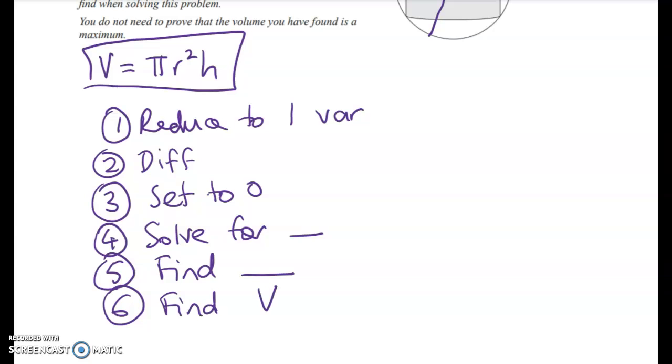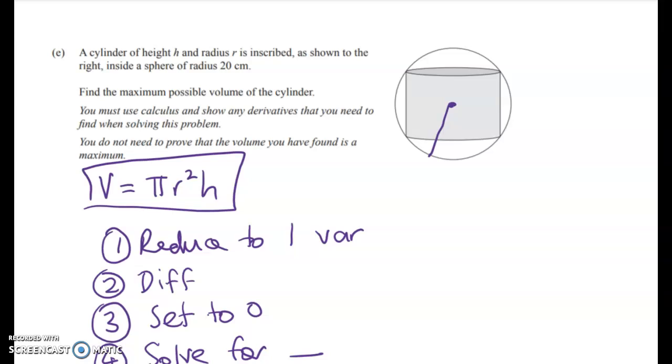So the only hard part of this question is this first bit of how we can reduce the problem down to one variable. To do that, we have to find a link between R and H. And as usual, that comes from Pythagoras.